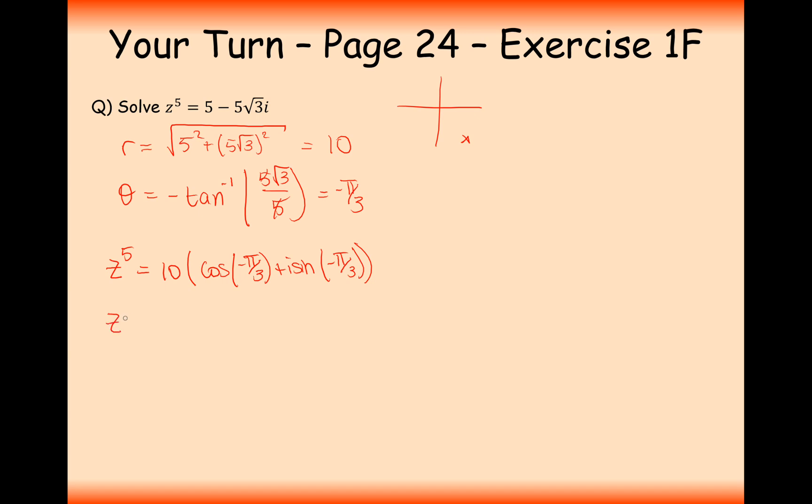So z to the power of 5 equals 10 times cos minus π by 3 plus i sine minus π by 3. Let's now take a 5th root of both sides, so it's now going to be 10 times cos minus π by 3 plus i sine minus π by 3. How many brackets do I need here? One more. Let's do that to the power of 1 5th now, and then we'll rewrite it out. So now we'll apply De Moivre's theorem. It will be 10 to the power of 1 5th, and that's not an easy calculation to do, so I'll just leave it as 10 to the power of 1 5th. But then we multiply the power into the argument, so it's now going to be cos minus π by 15 plus i sine minus π by 15. So there we are. So that's our first answer.